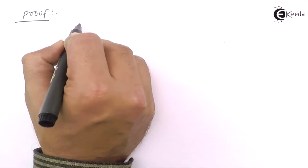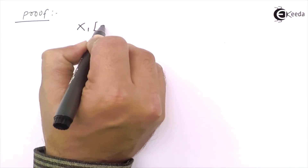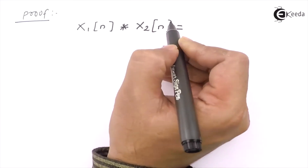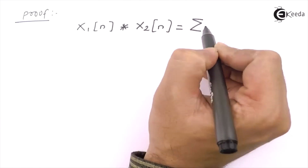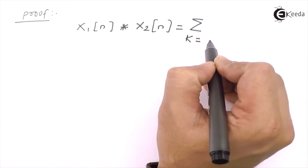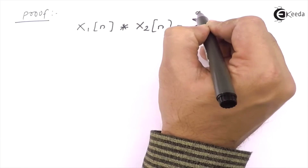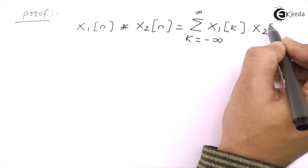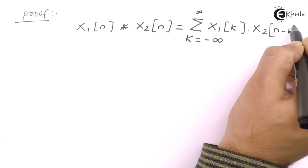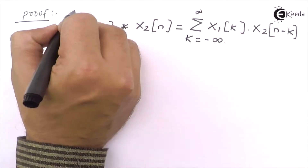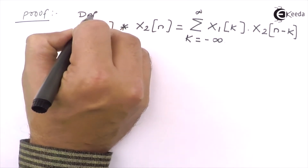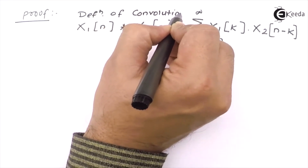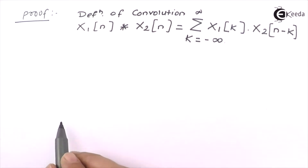Since we know the convolution of two signals, X1[N] convolved with X2[N] is nothing but the summation where k varies from minus infinity to infinity of X1[k] times X2[N-k]. This is the definition of convolution. We are going to take the Z transform of this convolution.